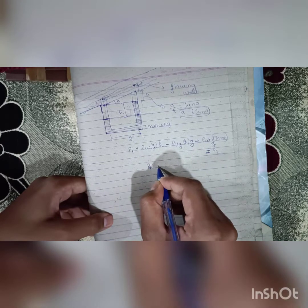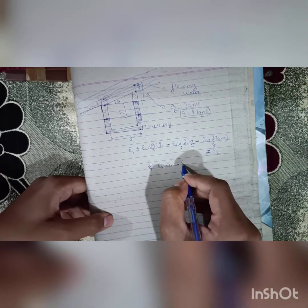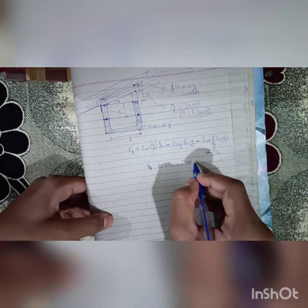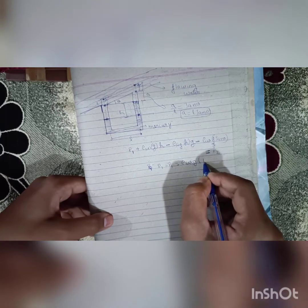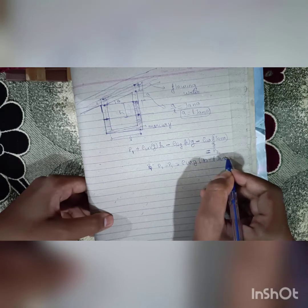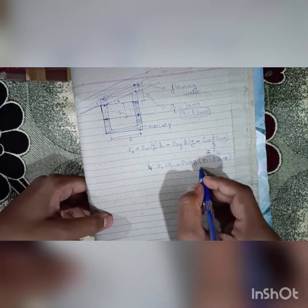The pressure difference is given by p1 or p2 minus p1, which equals rho water g h minus l tan theta. This will be the pressure difference.